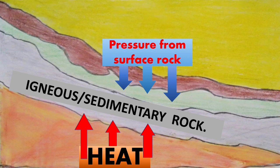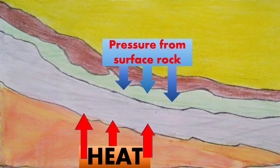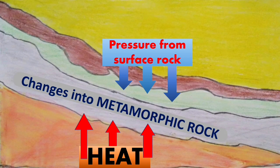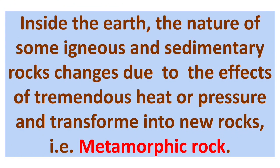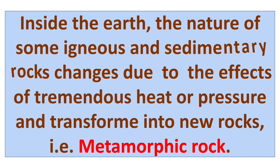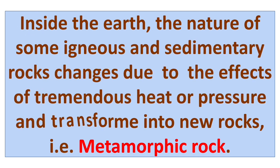When igneous and sedimentary rocks get extreme or tremendous heat and pressure, they change into metamorphic rocks. Metamorphic rocks are harder and stronger. Inside the earth, the nature of some igneous and sedimentary rocks changes due to tremendous heat or pressure and they transform into a new rock — metamorphic rock. I hope now you understand how metamorphic rock is formed.